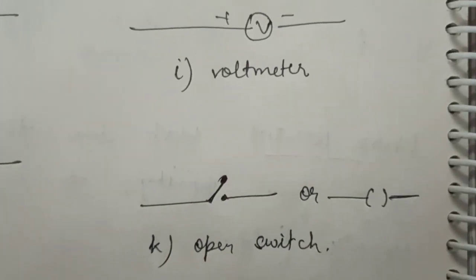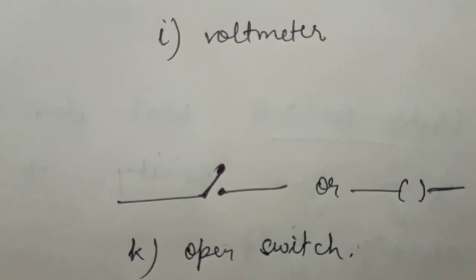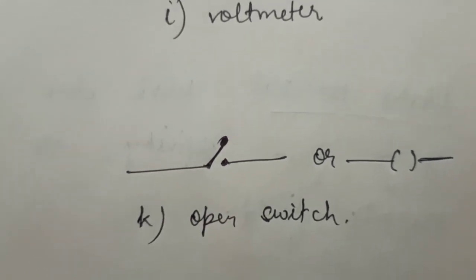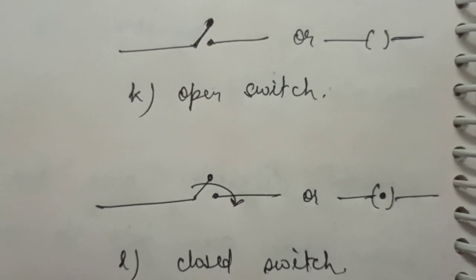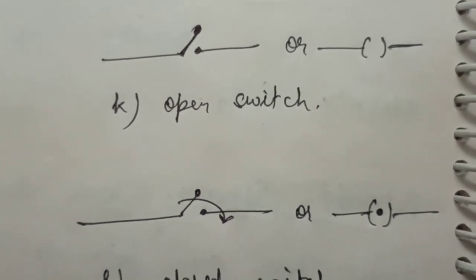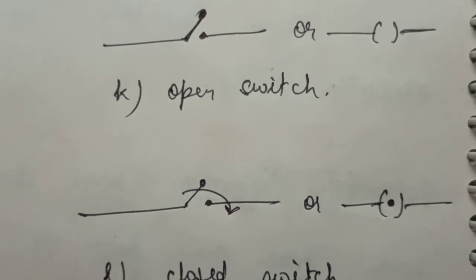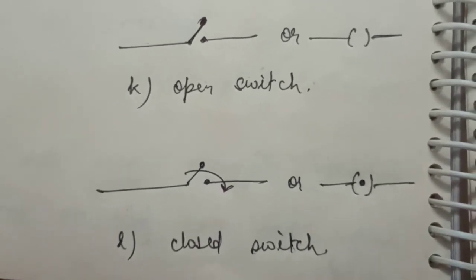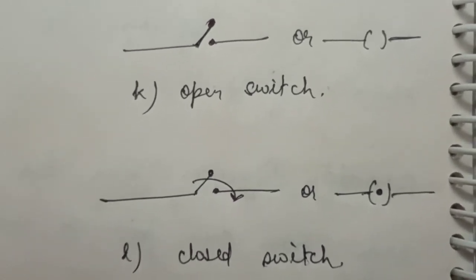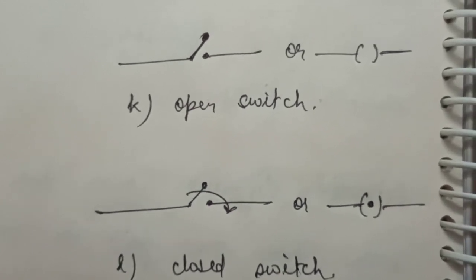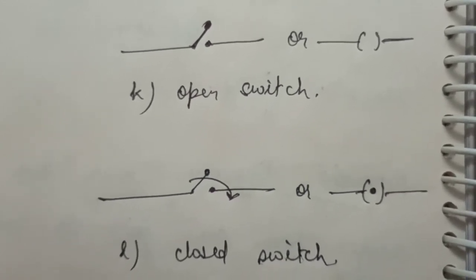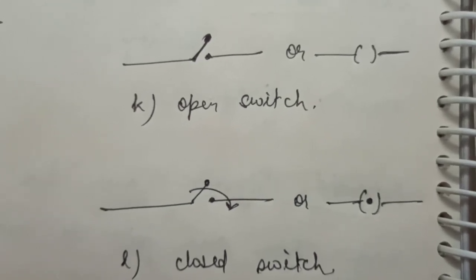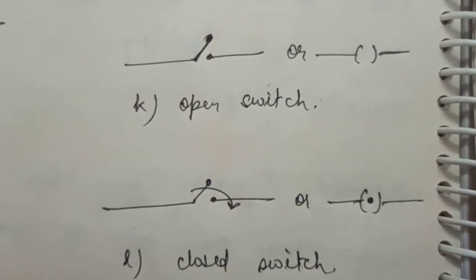For a switch: when the two wires are not joined there is a gap, so it is called an open switch. When the wires are in contact the path is closed, so it is a closed switch. Try to recollect all these symbols and definitions. After this we will study Ohm's law and proceed with resistance, its combinations in series and parallel, heating effect of electric current, and power. Till then, have a good day. Thank you.